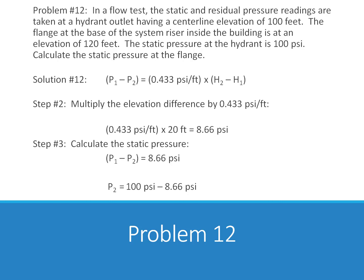Problem number 12. We multiply the elevation difference by 0.433 PSI per foot. 0.433 PSI per foot times 20 feet equals 8.66 PSI. Step 3, calculate the static pressure. P1 minus P2 equals 8.66. P2 is equal to 100 PSI minus 8.66 PSI equals 91.34 PSI.